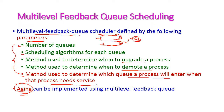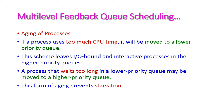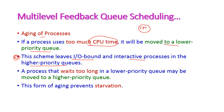Aging can be implemented using multi-level feedback queue. Regarding aging of processes: if a process uses too much CPU time — that is, if a process executes for a very long time — it will be moved to lower priority queues. This scheme leaves I/O-bound and interactive processes in higher priority queues. So if a process utilizes more CPU time, it will be preempted and moved to lower priority queues.